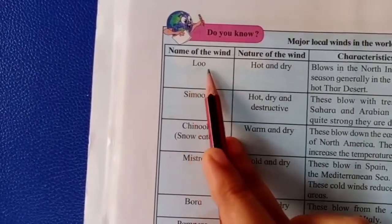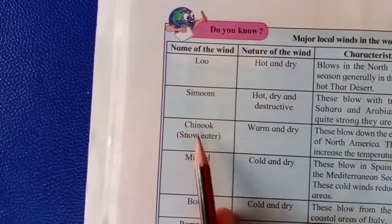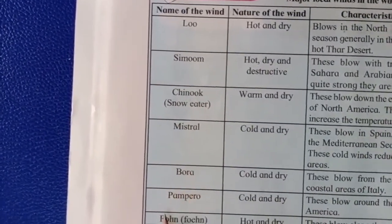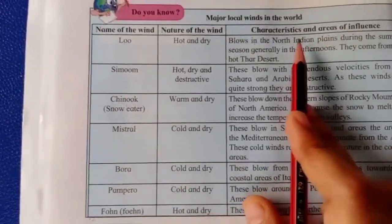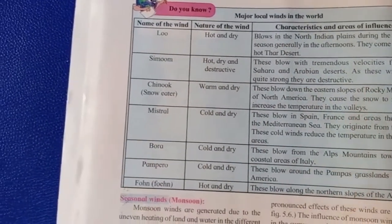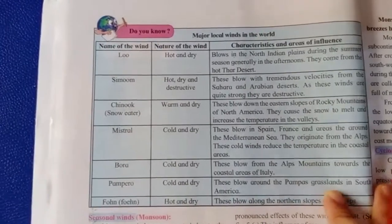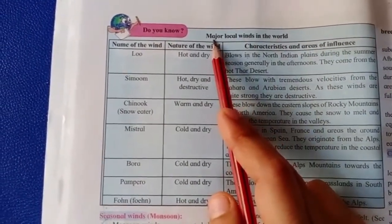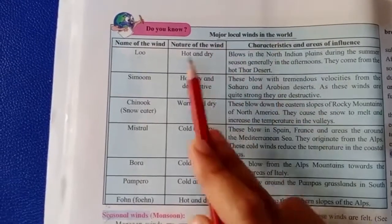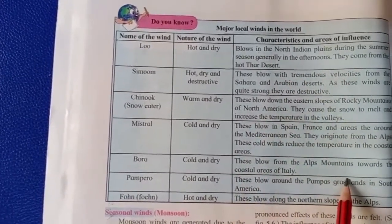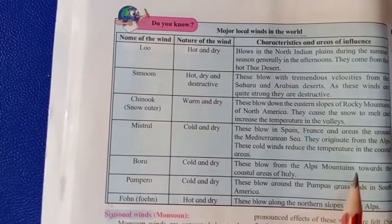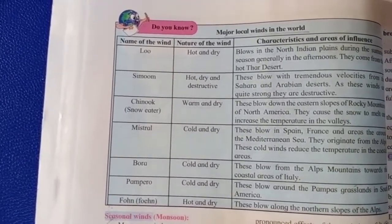Major local winds in the world include the Simoom, Chinook, Mistral, Bora, Pampero, and Foehn. A chart on page 26 of the textbook lists these major local winds with their nature and the area where they blow. I hope you have understood about planetary winds and local winds. We will continue the next part of this lesson in our second video. Thank you.